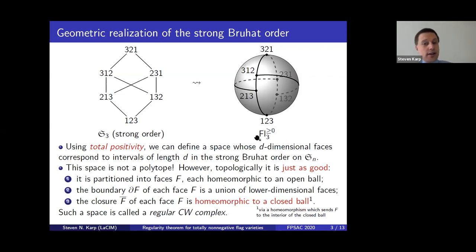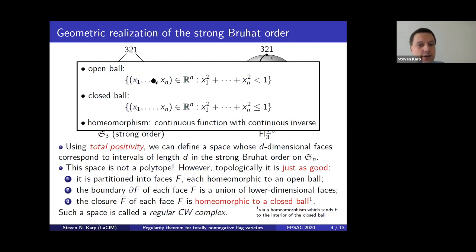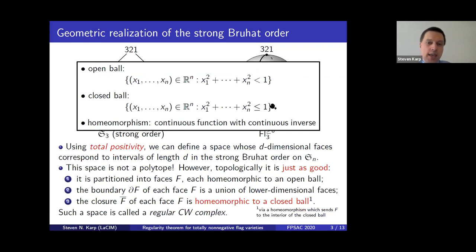There is a bit of topology in this talk, so let me give a quick refresher. By an open ball I mean the set of points in Rⁿ which are distance strictly less than one from the origin. A closed ball is the closure — points at distance less than or equal to one. We consider these spaces up to homeomorphism, where a homeomorphism is a continuous invertible function whose inverse is also continuous.